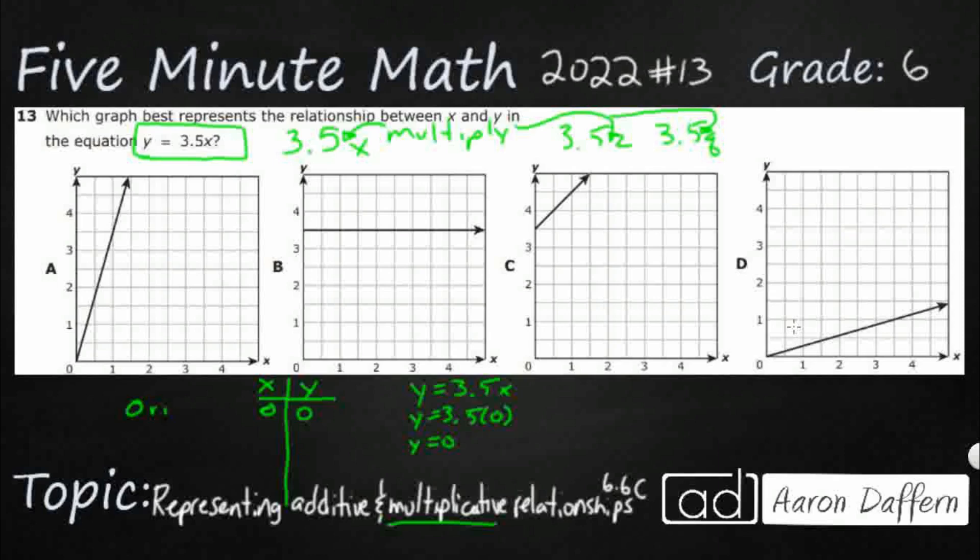And we can automatically get rid of two of our graphs because we don't have the zero, zero. So I'm going to get rid of B because this doesn't even have any type of slope right here. It's just a straight line across.